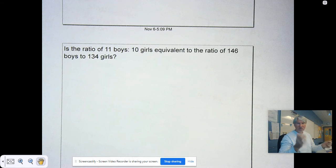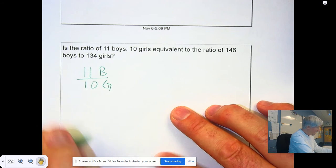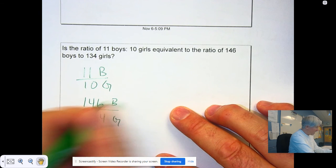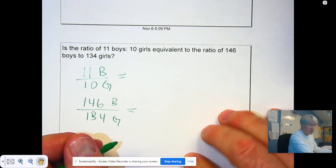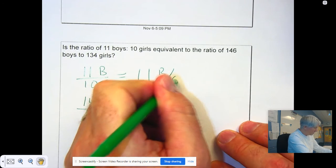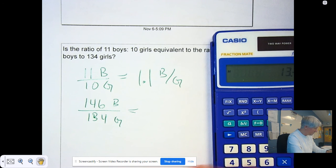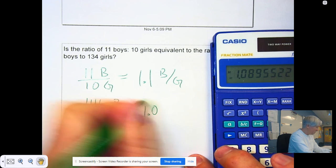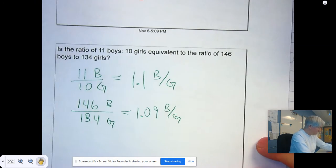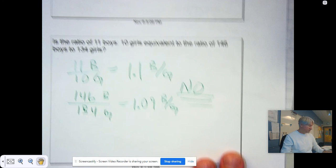So, is your ratio of 11 boys to 10 girls equivalent to 146 boys for 134 girls? We can take 11 divided by 10, that's boys to girls, and 146 divided by 134, again, boys to girls, and we can find the unit rates and compare them. 11 divided by 10 is 1.1 boys for every one girl. And then, 146 divided by 134 is 1.09, if I round that, boys per girl. So, they are not equivalent, because 1.1 is not equal to 1.09.